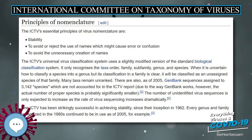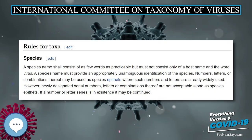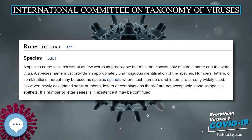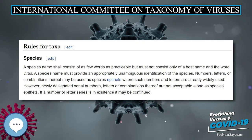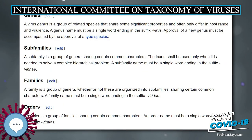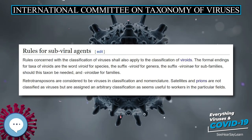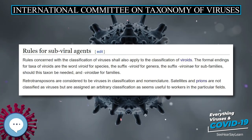Families. A family is a group of genera, whether or not these are organized into subfamilies, sharing certain common characters. A family name must be a single word ending in the suffix viridae. Orders. An order is a group of families sharing certain common characters. An order name must be a single word ending in the suffix virales.